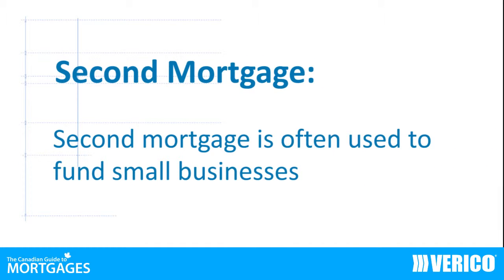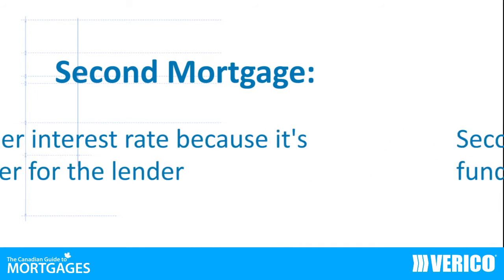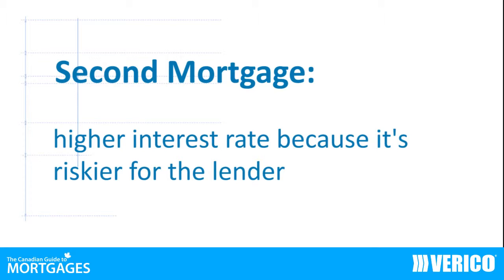A second mortgage is granted when there is already one other mortgage registered against your property. If you default and the property is sold, the second mortgage is paid only after the first mortgage has been repaid. Because it's riskier for the lender, a higher interest rate is usually charged for the second mortgage.